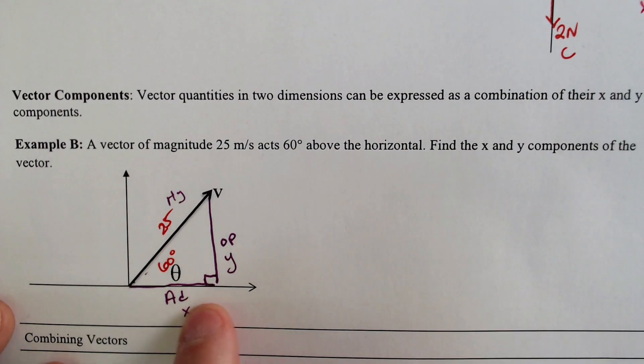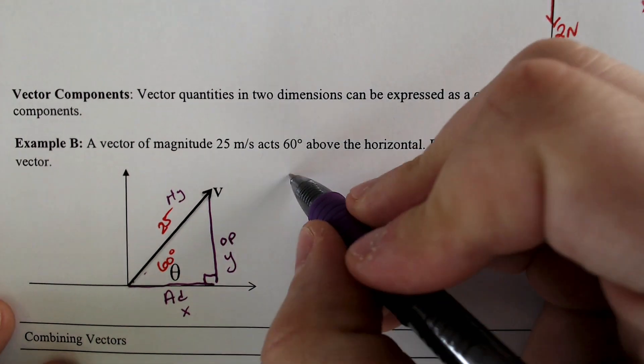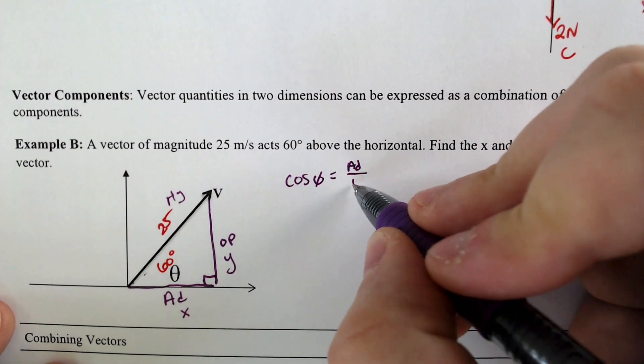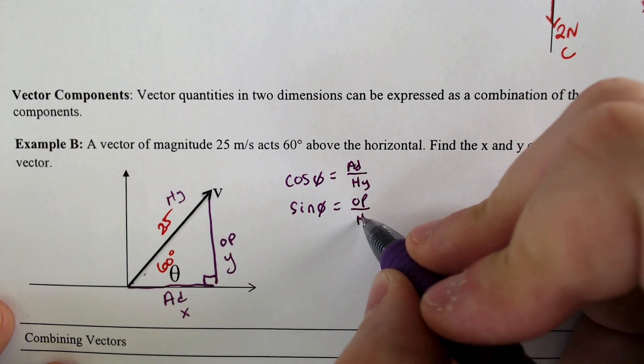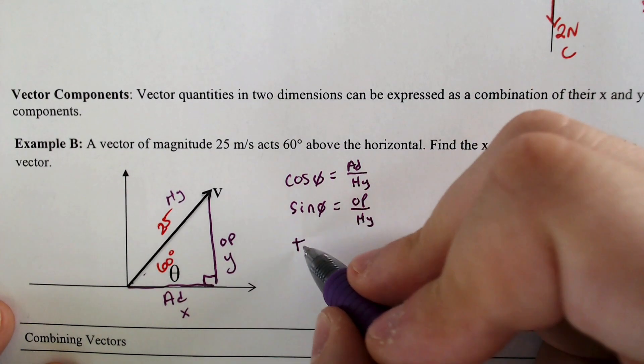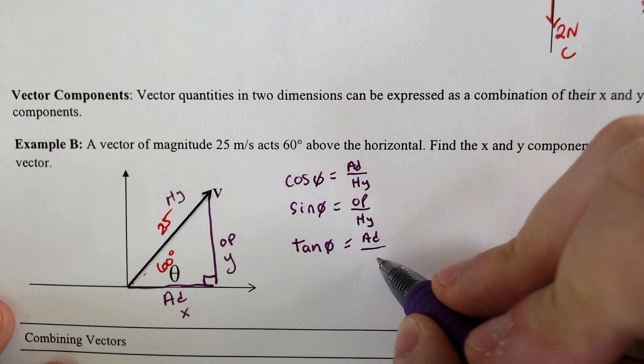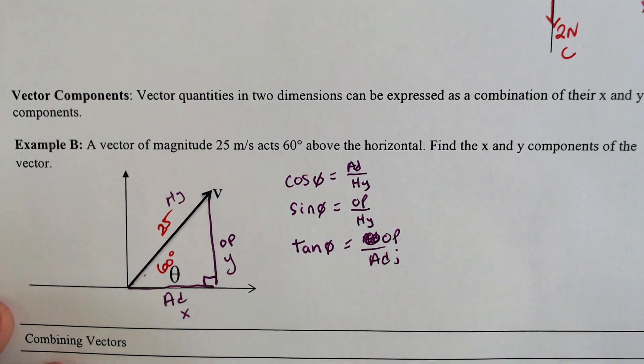So the cosine is always going to give you the x component in a way because cosine, for those of you that have forgotten, of any angle is equal to adjacent over hypotenuse, and sine of any angle is equal to opposite over hypotenuse. I'm doing it outside of the order of SOH CAH TOA. Tan, although we won't use it in this example, is opposite over adjacent.